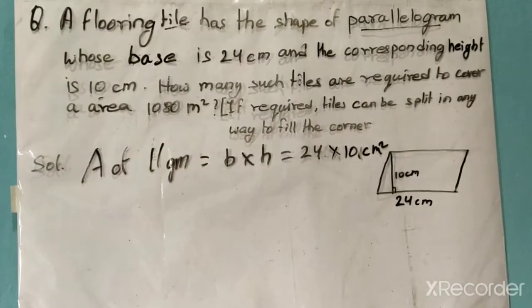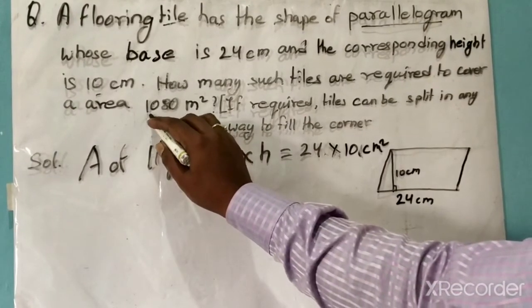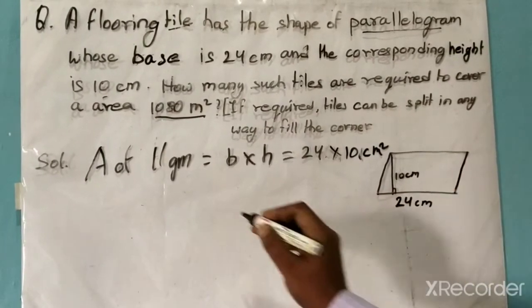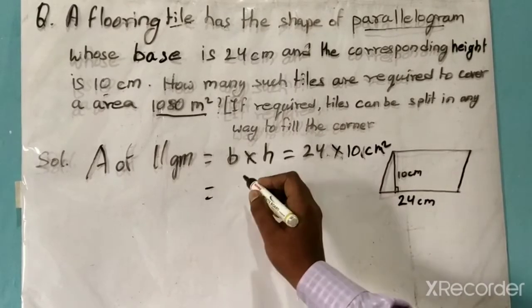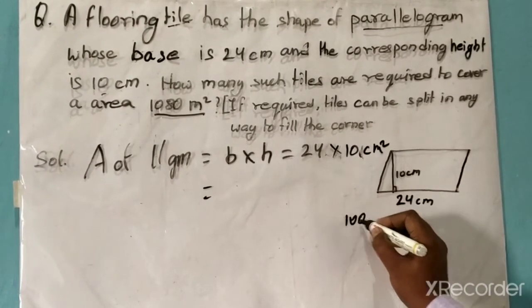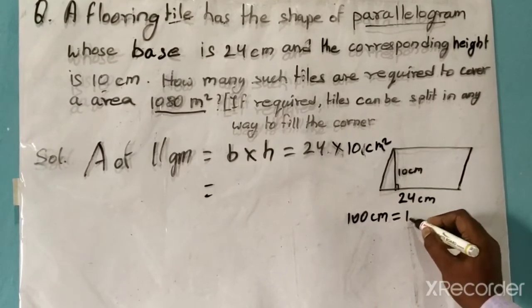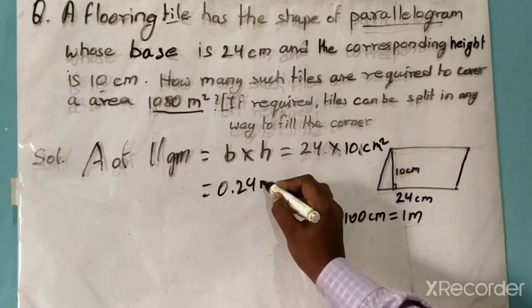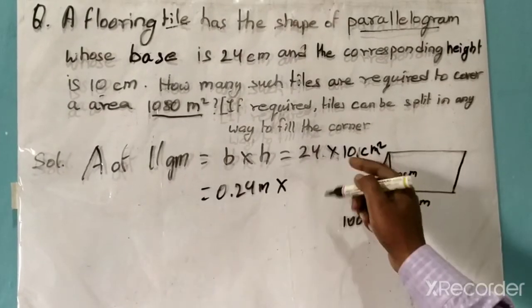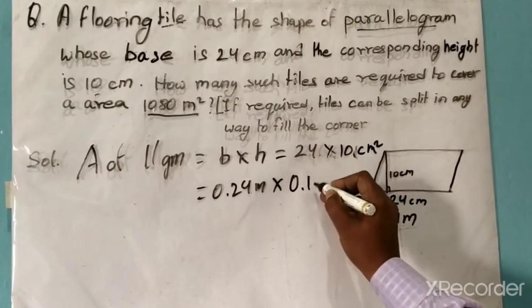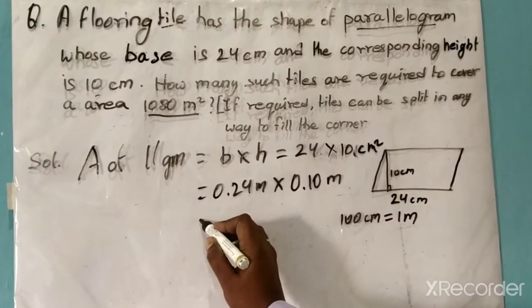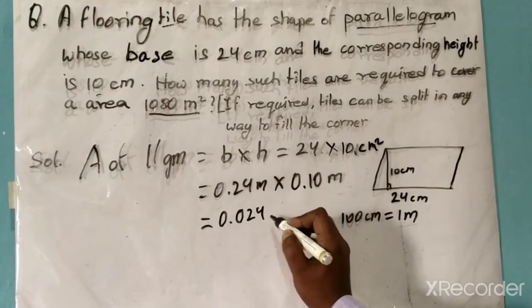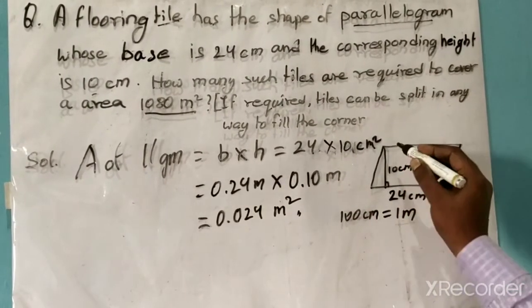Here the floor area is given in square meters, so first we will convert centimeters into meters. Since 100 centimeters equals 1 meter, the base becomes 0.24 meters and the height becomes 0.10 meters. On multiplying these, we find the area of each tile is equal to 0.024 square meters.